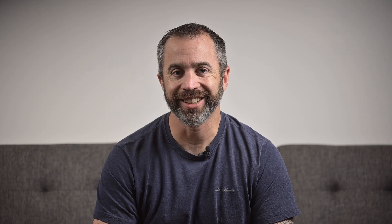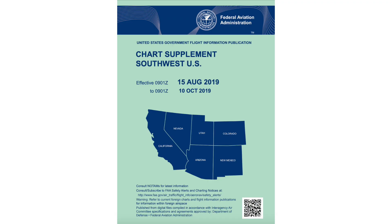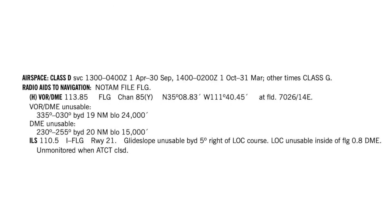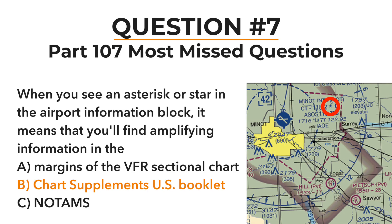Number seven is another chart reading question. When you see an asterisk or a star in the airport information block, it means you'll find amplifying information in the margins of the VFR sectional chart, the chart supplements US booklet, or the NOTAMs. A star means you need to look up supplemental information to get the whole picture for that airport — because it can't fit on the already crowded chart. The chart supplements booklet has a lot of information about every airport in the US, including airport layout, fuel, operating hours, and any special procedures.